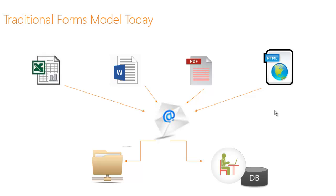Once forms are approved or taken through the right steps via email — assuming they make it through and everybody finds them — they're moved to a file share with thousands of other forms, and may also be re-keyed into back-office systems. All of this, while better than paper, is still a manual process. For things that need to be audited, such as government-regulated or HR forms, this can be too loose of a process.